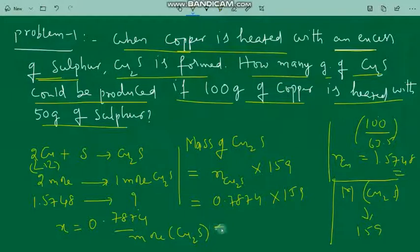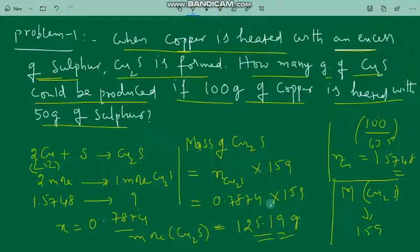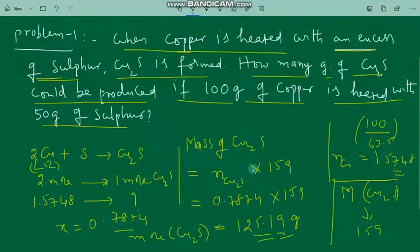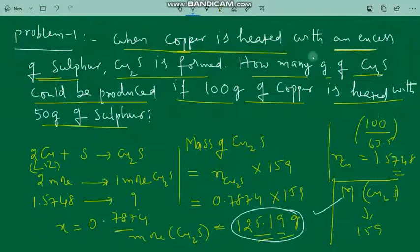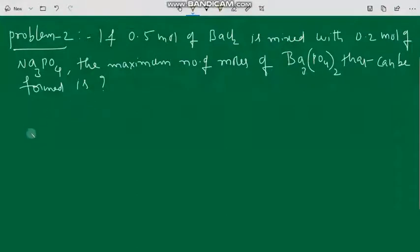So the mass of copper sulfide formed = 0.7874 × 159 = 125.2 grams. The answer is approximately 125.2 grams of copper sulfide could be produced.